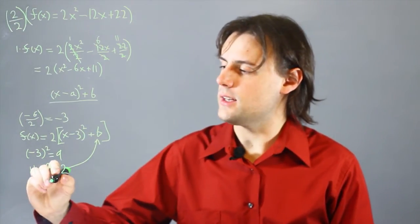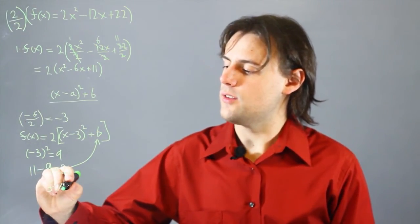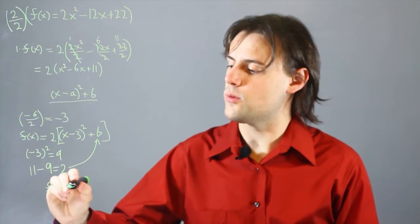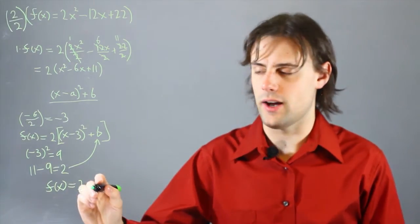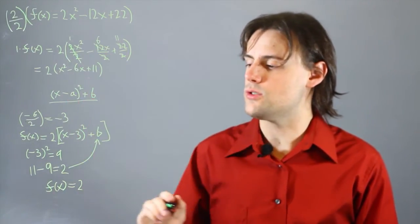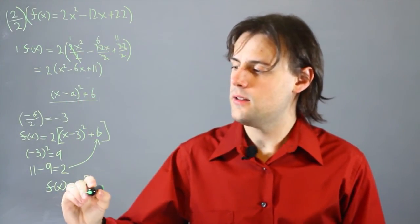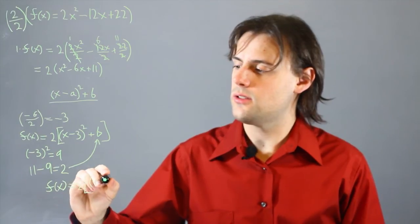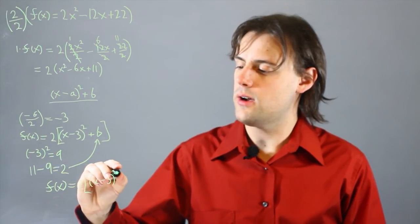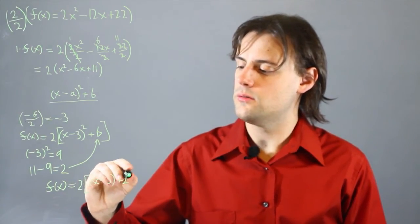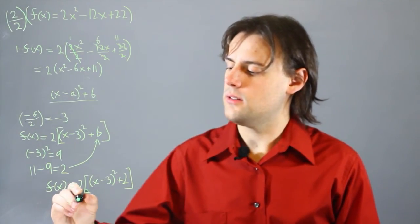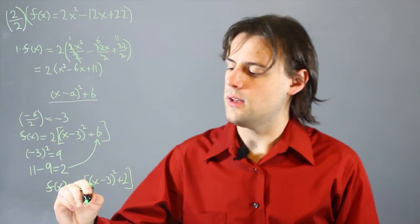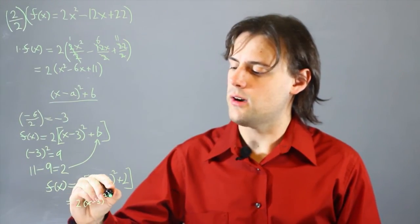So, finally, we have a factored form for the original polynomial, and it's written as 2, which is the common factor for all of the terms in the original expression, times x minus 3 squared plus 2, which could be rewritten as 2 times x minus 3 squared plus 4.